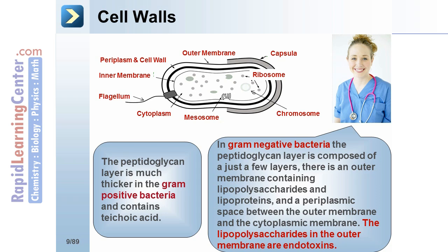The peptidoglycan layer is much thicker in gram-positive bacteria and contains teichoic acid. In gram-negative bacteria, the peptidoglycan layer is composed of just a few layers. There is an outer membrane containing lipopolysaccharides and lipoproteins, and a periplasmic space between the outer membrane and the cytoplasmic membrane. The lipopolysaccharides in the outer membrane are endotoxins.